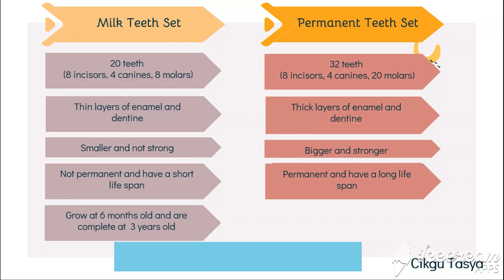Now let's look at the similarities. The only similarity between milk teeth and permanent teeth is that they both have the same types of teeth: incisors, canines, and molars. Other than that, everything is different. That's all for today — I hope you understand. Don't forget to like, share, and subscribe. Thank you!